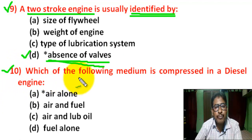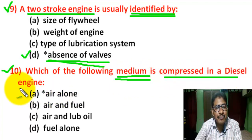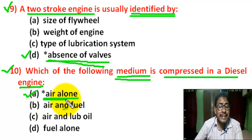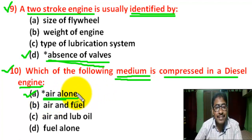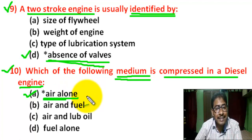Question number 10: Which of the following medium is compressed in a diesel engine? There are four options. Correct answer is A — air alone. In a diesel engine, during the suction stroke, the inlet valve opens and the exhaust valve closes, and only air is drawn into the cylinder.